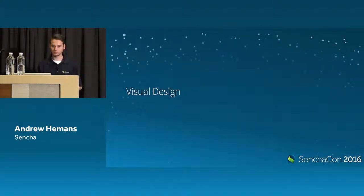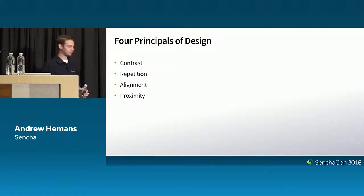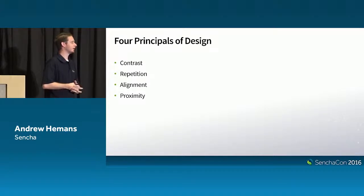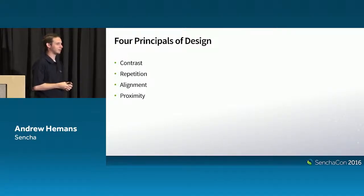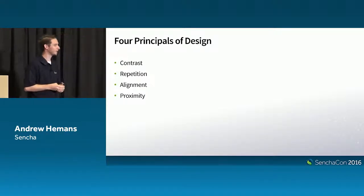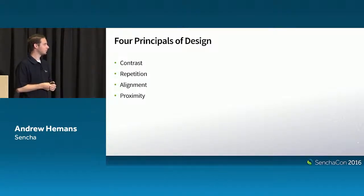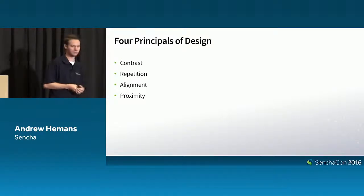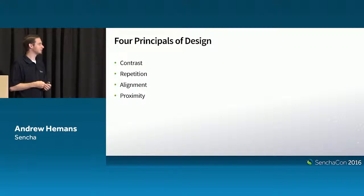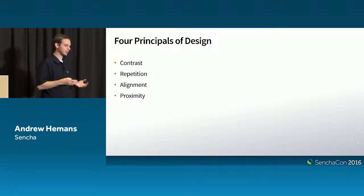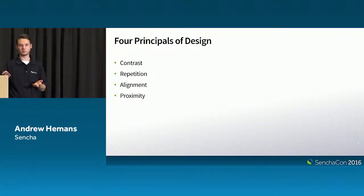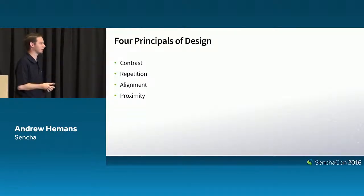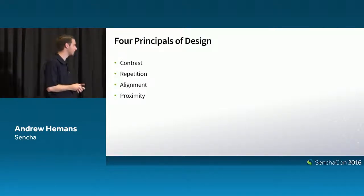That leads us into visual design. There are a few things I always try to remember when working in visual design: the four principles of design. These were created by a designer named Robin Williams — not the late great Robin Williams, but a nice lady who I think lived in Arizona. The four concepts are contrast, repetition, alignment, and proximity. If we think about these four principles as we're designing our layouts or applications, and use this as a checklist as we're designing, we know we're doing something right.